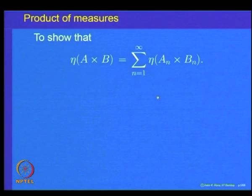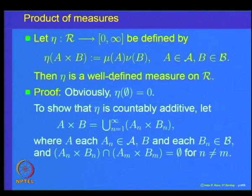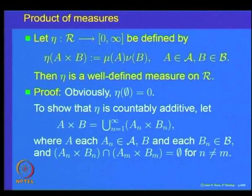This is how one proves that η, defined as η of a rectangle A×B equal to μ(A)·ν(B), is countably additive. Let me slowly go through the proof once again. There is only one small idea involved in it and the rest is straightforward application of earlier results.